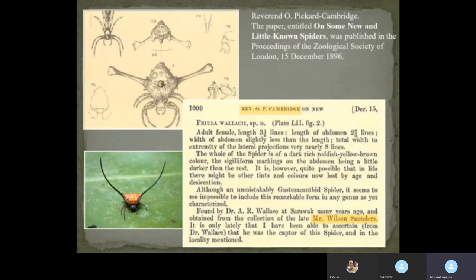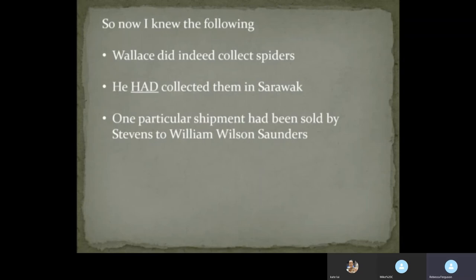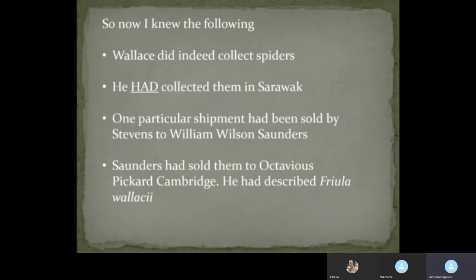Now we look at the facts. The Reverend Pickard-Cambridge was sold his collection by Mr William Saunders. So now I knew the following: Wallace had indeed collected spiders; he had collected them in Sarawak; one particular shipment had been sold by Stevens to William Wilson Saunders; Saunders had sold them to Octavius Pickard-Cambridge, who had described Friula wallacei. But the problem now was: where was the type specimen? Without a type specimen to prove that the spider exists, it is worthless. And so we set upon another quest.